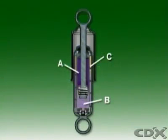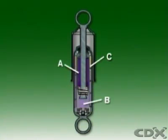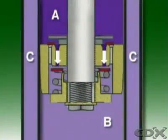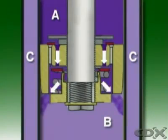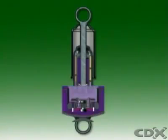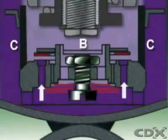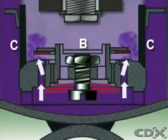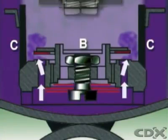In the rebound or extension phase, the piston and rod move upwards and the volume of chamber A is reduced. Chamber A becomes a high pressure area, and fluid flows through the extension valve in the piston into chamber B. However, the withdrawal of the piston from B greatly increases its volume, and fluid flow from A is insufficient to fill the space. Pressure in B falls below that of the reservoir, causing the base intake valve to be unseated. Fluid flows from the reservoir into chamber B, keeping the inner tube full.